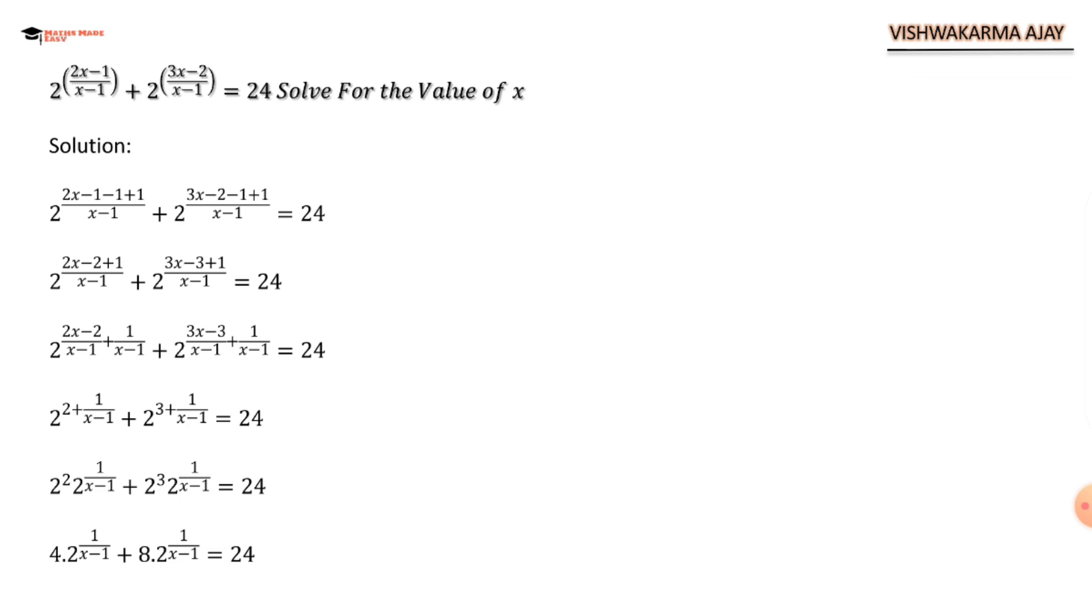4 plus 8 will give me 12. So we come here now: 12 times 2 to the power (1 upon x minus 1). Now you know what to do here. We can divide the entire equation by 12. So we have 2 to the power (1 upon x minus 1) is equal to 2.